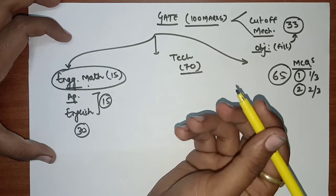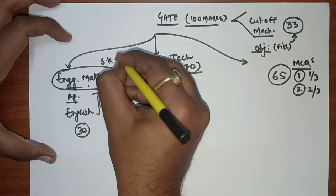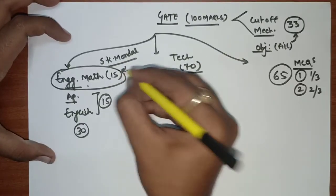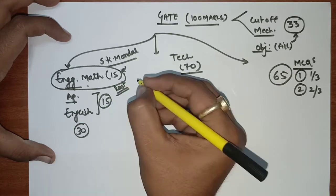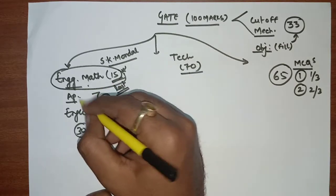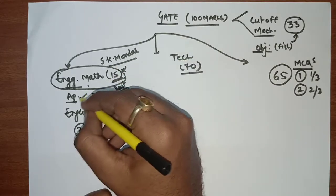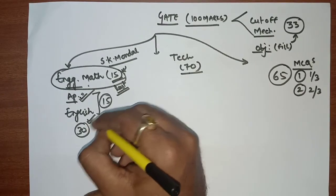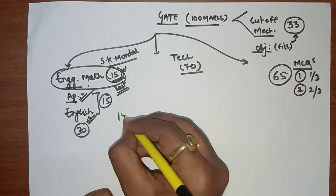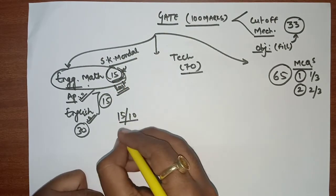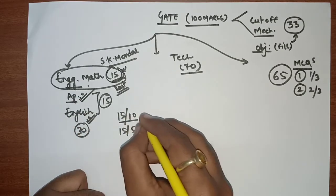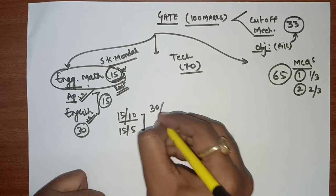Engineering Mathematics is very simple — basic mathematics. If you practice previous year questions properly, you can score 15 out of 15 in mathematics. For Aptitude and English, if you have practice you can do well. I estimate you can target 10 marks out of 15 in Engineering Mathematics and 5 marks out of 15 in Aptitude and English, giving you 15 marks combined from this section.